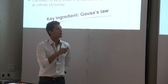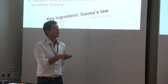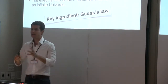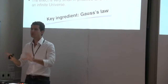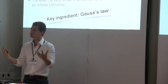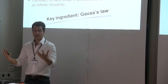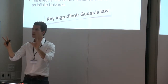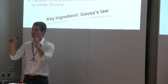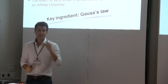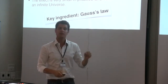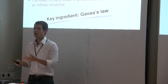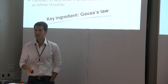A key ingredient for all of this was Gauss's law — the moment I constructed the bridge between the continuous model and the discrete model, I used the fact that two masses gravitate the same way as if they were concentrated at two points. But this is a very specific characteristic of Newtonian gravity and, to some extent, of relativistic gravitation.